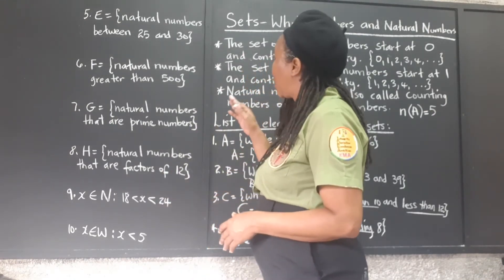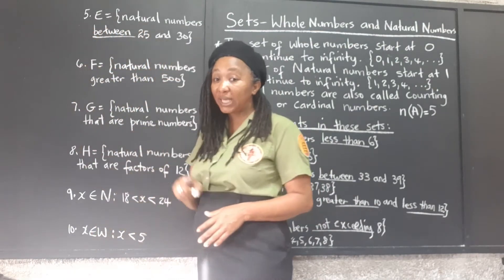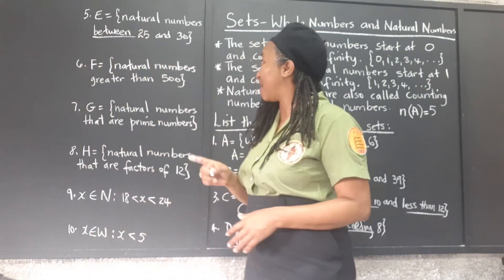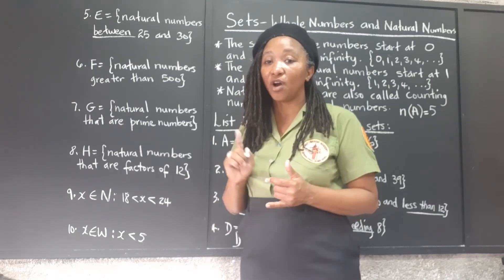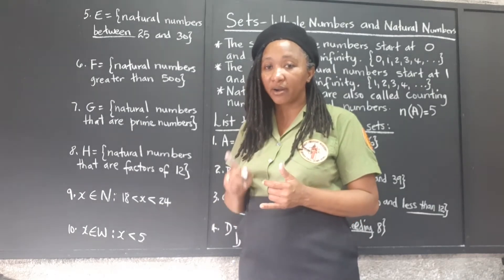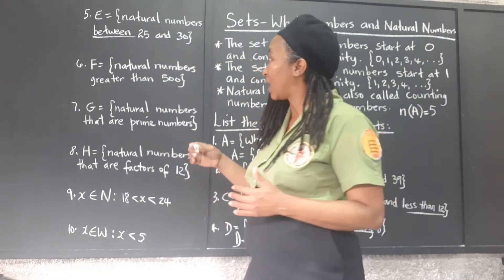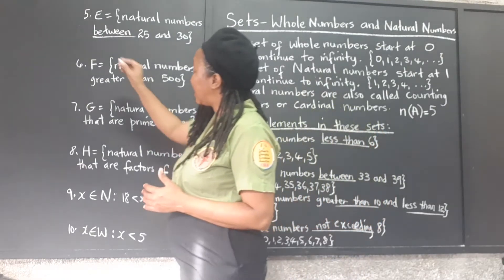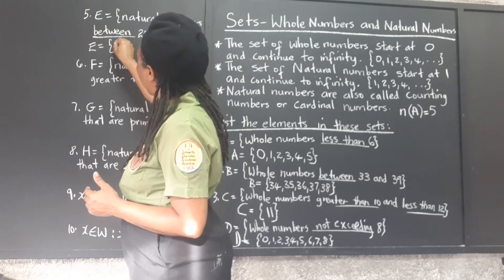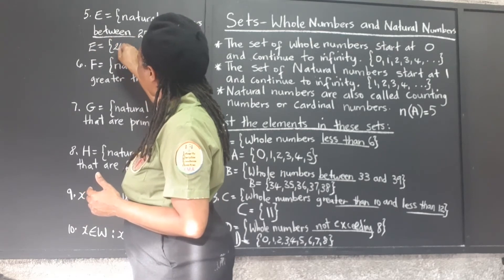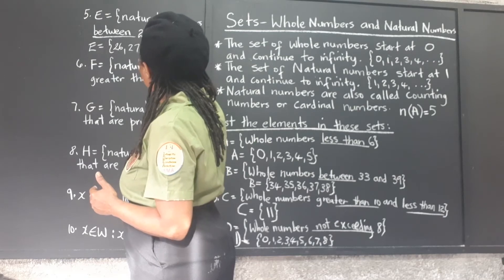Set E: the natural numbers between 25 and 30. We are not going to include 25 or 30 — just the ones between them. Since these are natural numbers (counting numbers), the elements are: 26, 27, 28, and 29.